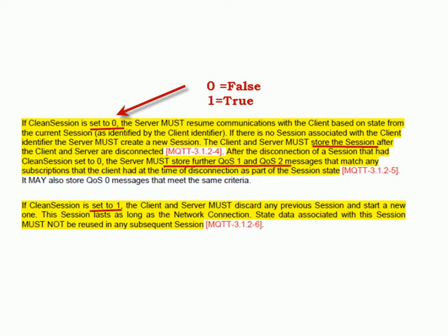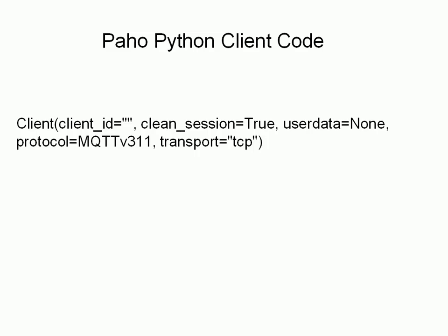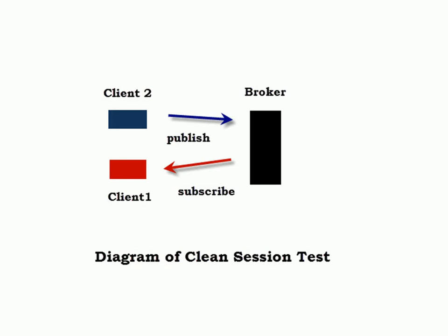We're going to look at those examples using the Python script. This is the Python code for creating the client instance — that's where you set the clean session flag to true or false, and by default it's set to true. In the demo script I've got two clients: client one is used to subscribe to topics and client two is used to publish.